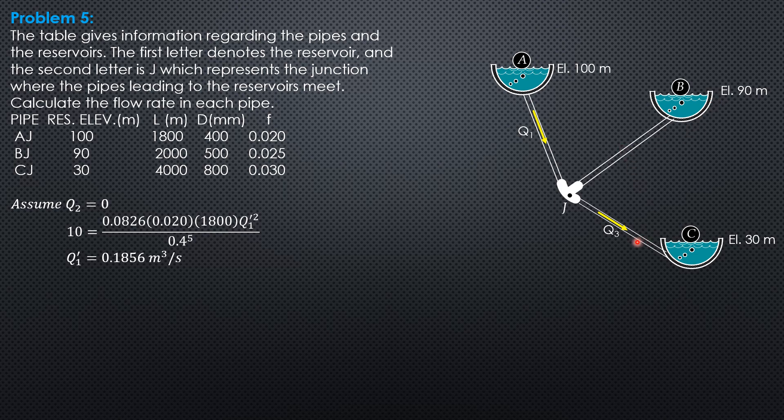Then Q3', the piezometric level is at B. That's the assumption. 90 minus 30 is 60. So 60 equals 0.0826 friction factor 0.03 length 4,000 Q3' square over diameter 0.8 to the fifth. So Q3' is 1.408 m³ per second, which is very much greater than Q1'. So therefore,